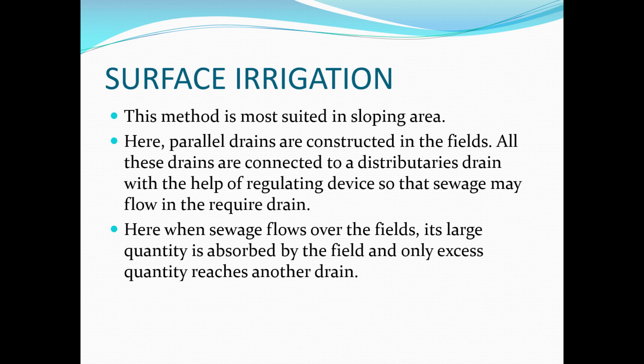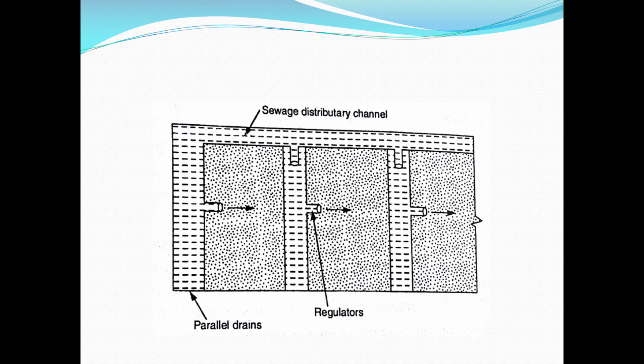Surface irrigation is a method suitable for sloped areas. Parallel drains are constructed in the field and all these drains are connected to distribution drains with the help of regulated devices, allowing sewage to flow to the required drain. The sewage flows to the field, large quantities are absorbed, and excess quantities reach the next drain. All are interlinked — the maximum amount is absorbed and the rest goes to the regulated drainage area.